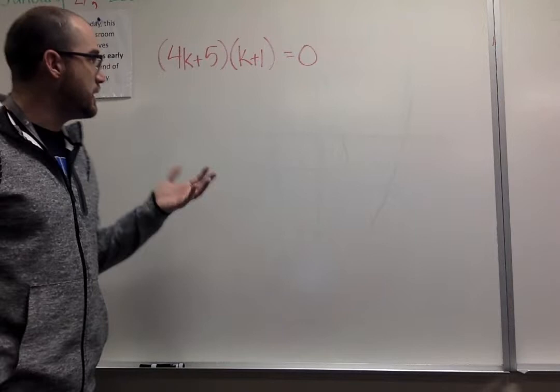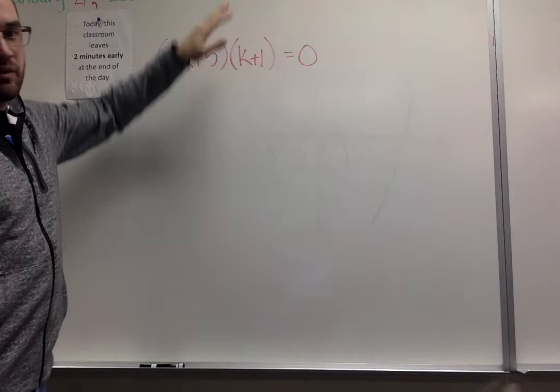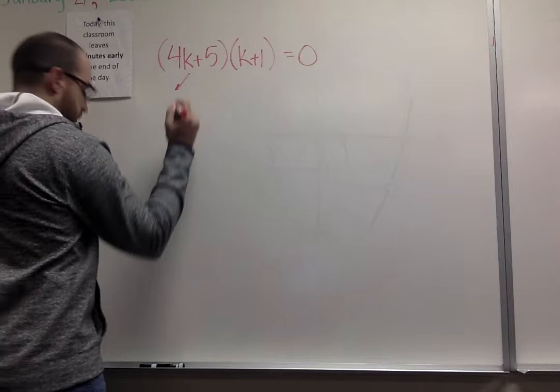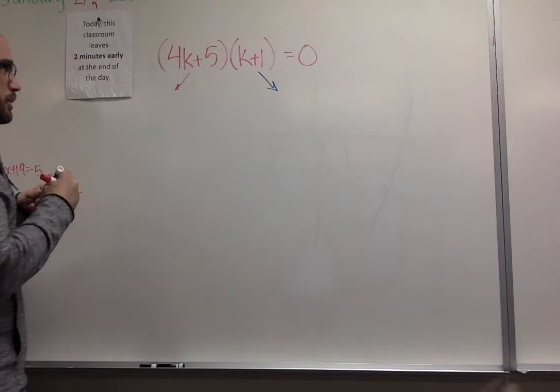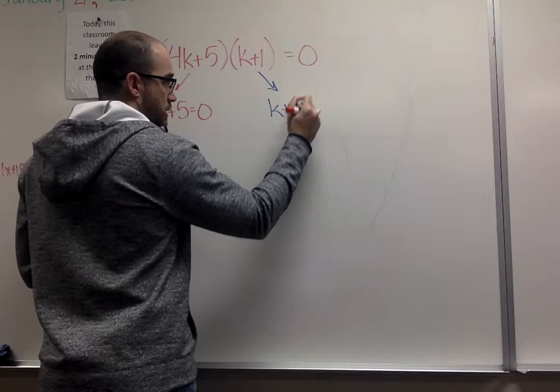Here, once you get to the point where you have your two parentheses, (4k+5)(k+1)=0, after we've already factored the problem, then I would split this into two separate pieces. I'm going to split them up and put them equal to 0. Each problem gets its own 0. It becomes its own equation.